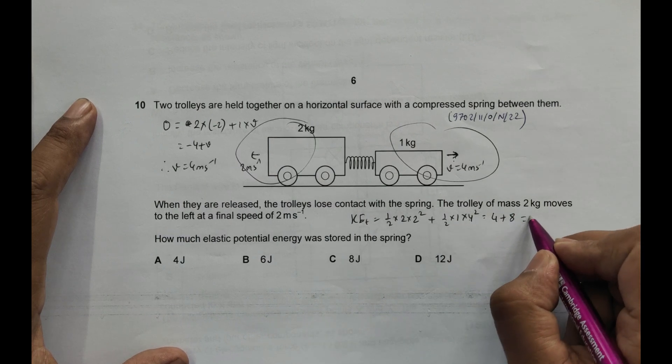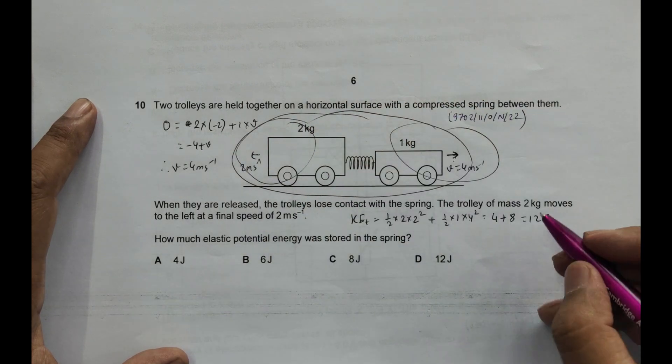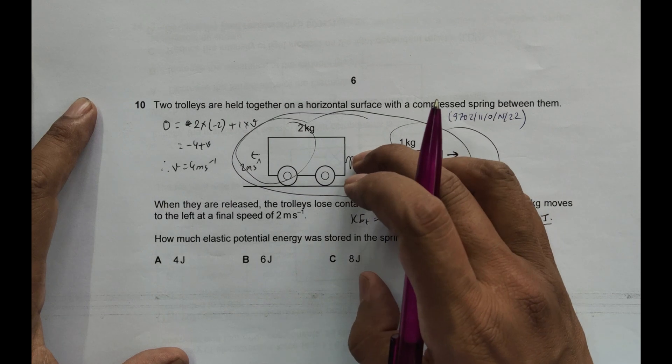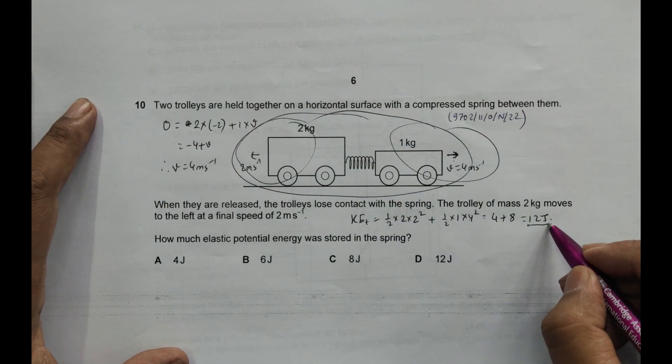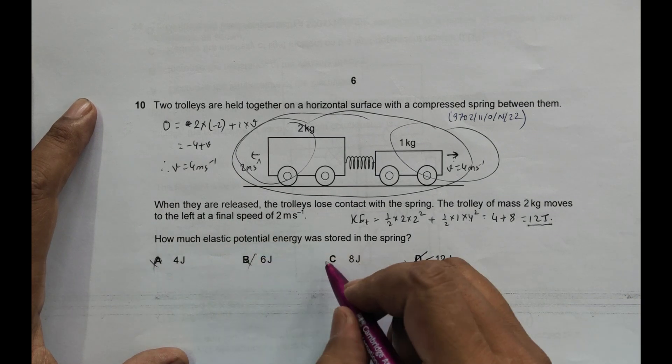So the total KE is equal to 12 joules and this KE has come from the initial elastic potential energy. So the elastic potential energy should also have been equal to 12 joules. This gives us D as the answer.